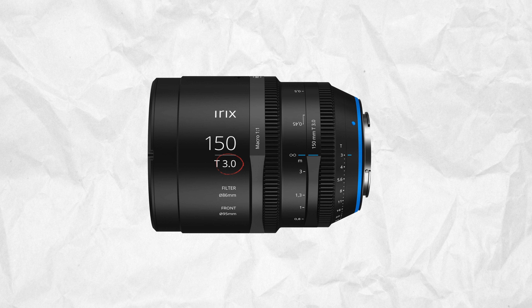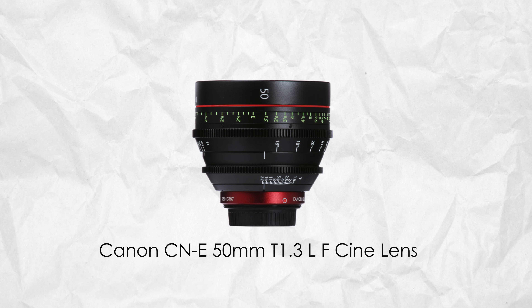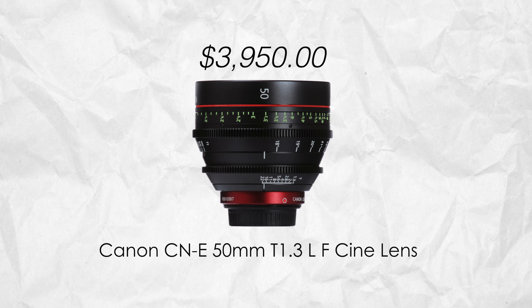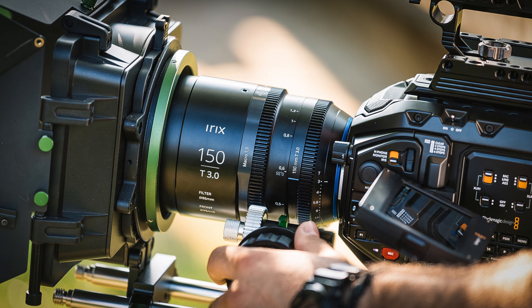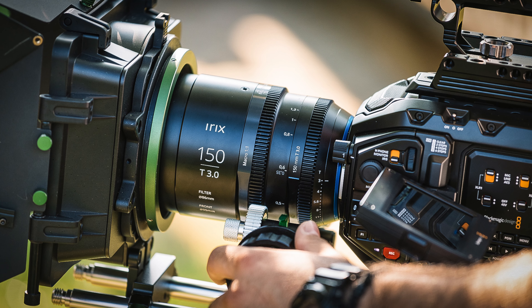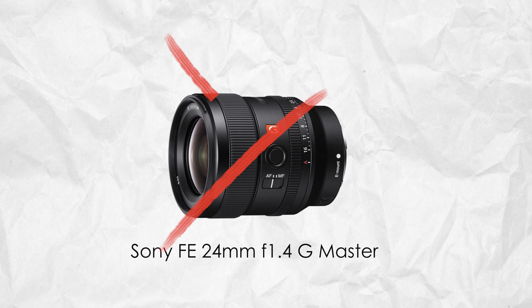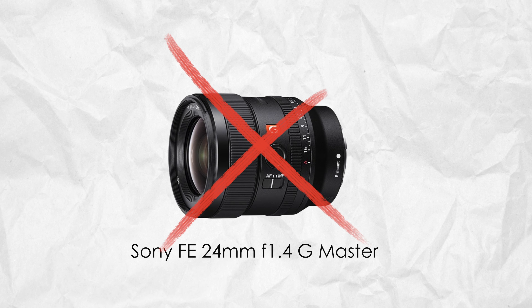T-stops can be found on cinema lenses, and it is one reason why these lenses are so expensive. Aside from the quality of optics, each lens is tested to determine precisely how much light is actually let in. F-stop lenses are not put through these extra tests.